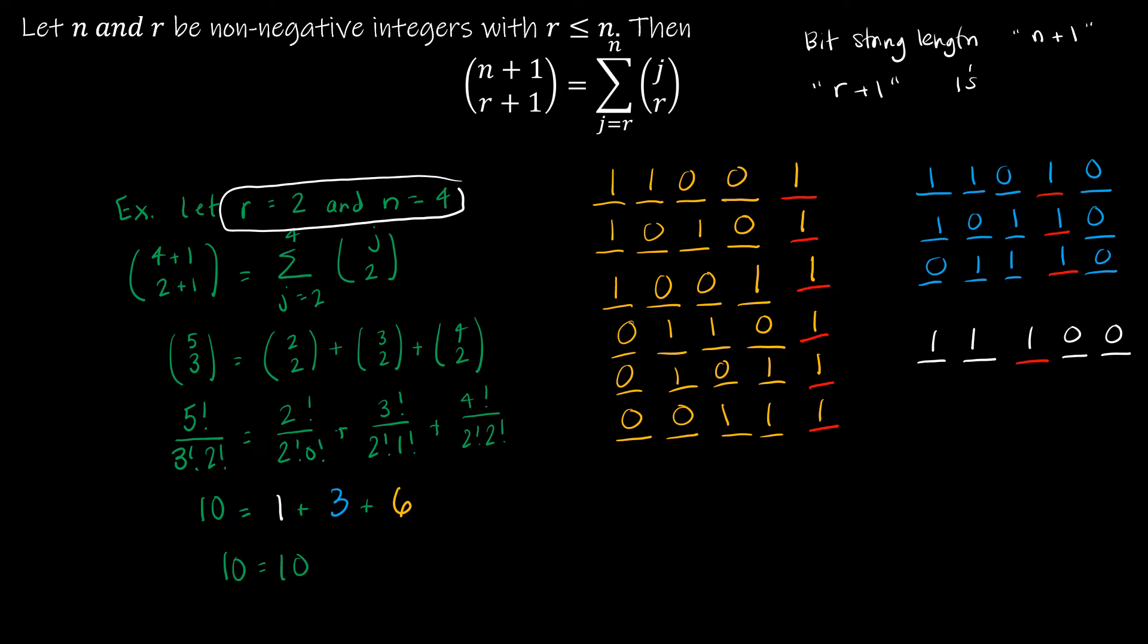So the question becomes, why would a summation as j goes from r to n of j choose r, why would it make sense that the number of bit strings of length n plus 1 with r plus 1 ones, why would it equal the summation on the right hand side?